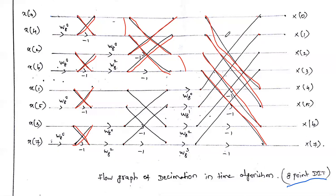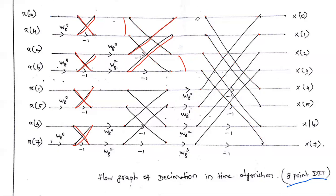To summarize the steps: first, shuffle the input in bit-reversed order and write the output in natural order. Second, draw the butterfly with three stages — in stage one connect 2-2 lines, in stage two connect four lines, and in stage three connect all eight lines. Third, mark the twiddle factor values on the diagram.